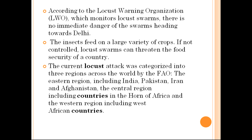If not controlled, locust swarms can threaten the food security of the country. A one-square-kilometer dense swarm can eat as much food as 35,000 people in a day. The current locust attack was categorized by the FAO into three regions: the eastern region including India, Pakistan, Iran, and Afghanistan; the central region including countries in the Horn of Africa; and the western region including West African countries.